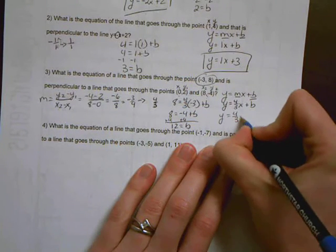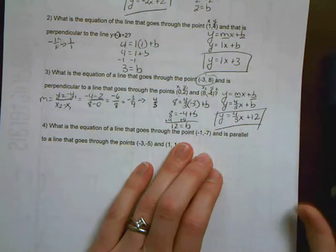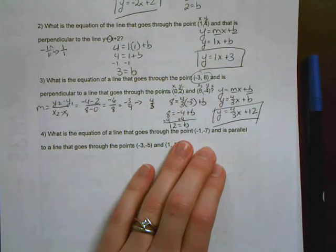So my final answer is y equals four-thirds x plus 12. There you go. All right, that's exact.